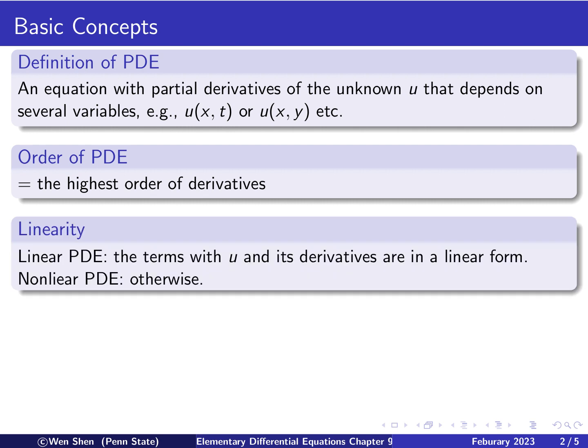And roughly speaking, there are two types of PDE, one we call linear and the other we call non-linear. So linear PDE would be all the terms with u and the derivatives of the unknown u, they are all in a linear form. And if that is not the case, then we call this a non-linear PDE.